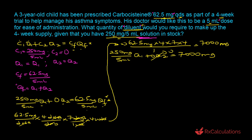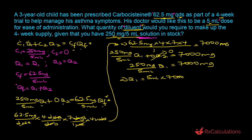Simplifying by eliminating the zero term, we have: (250 mg / 5 ml) × Q1 = 7,000 mg. Solving for Q1: Q1 = (5 ml × 7,000 mg) / 250 mg = 140 milliliters. So we need 140 ml of the stock solution.